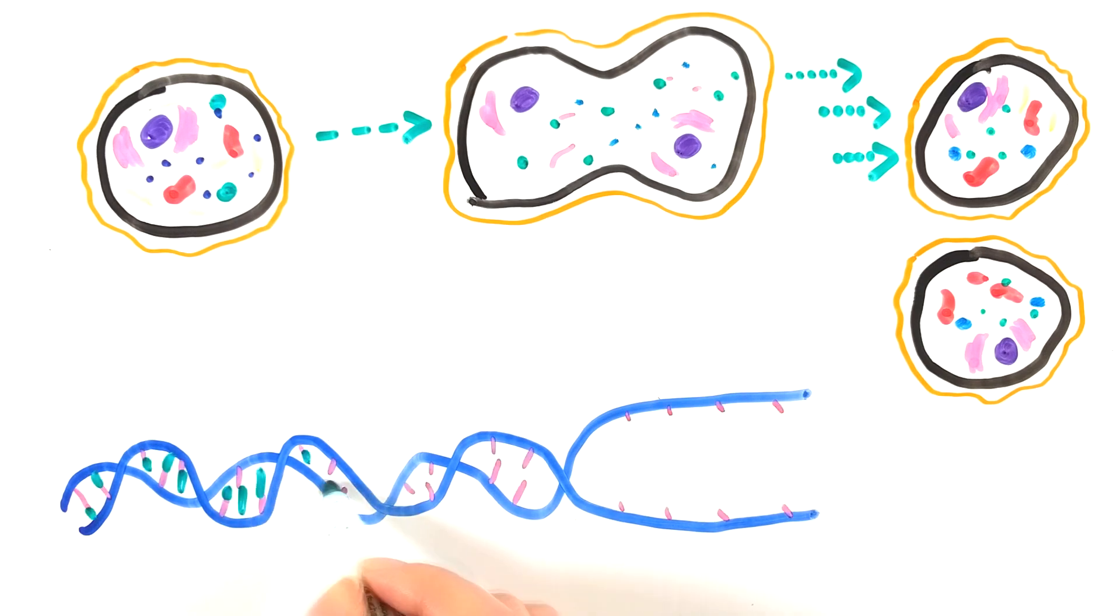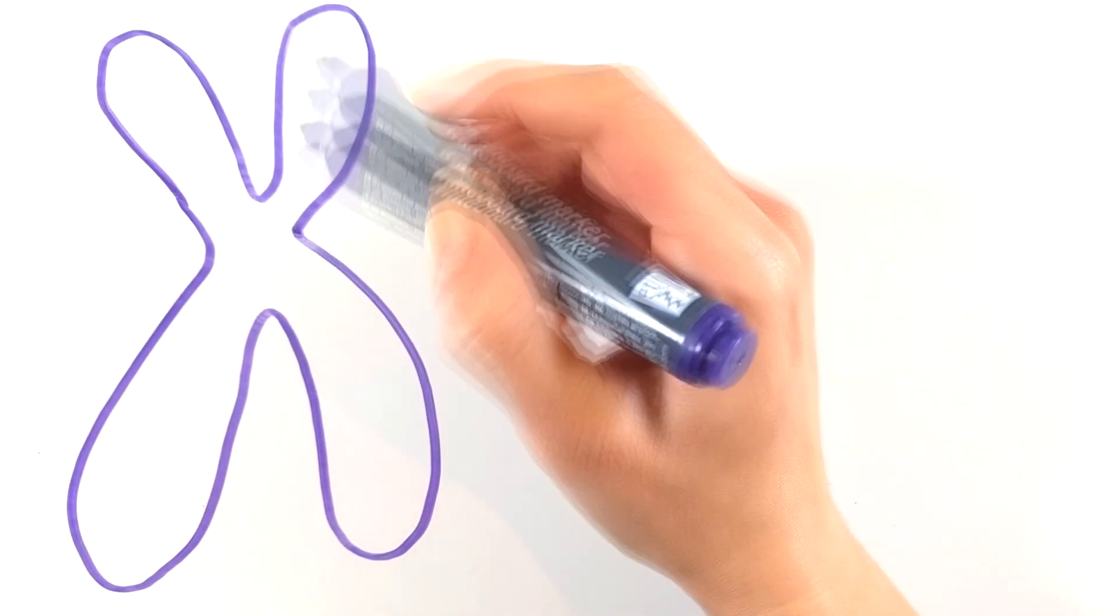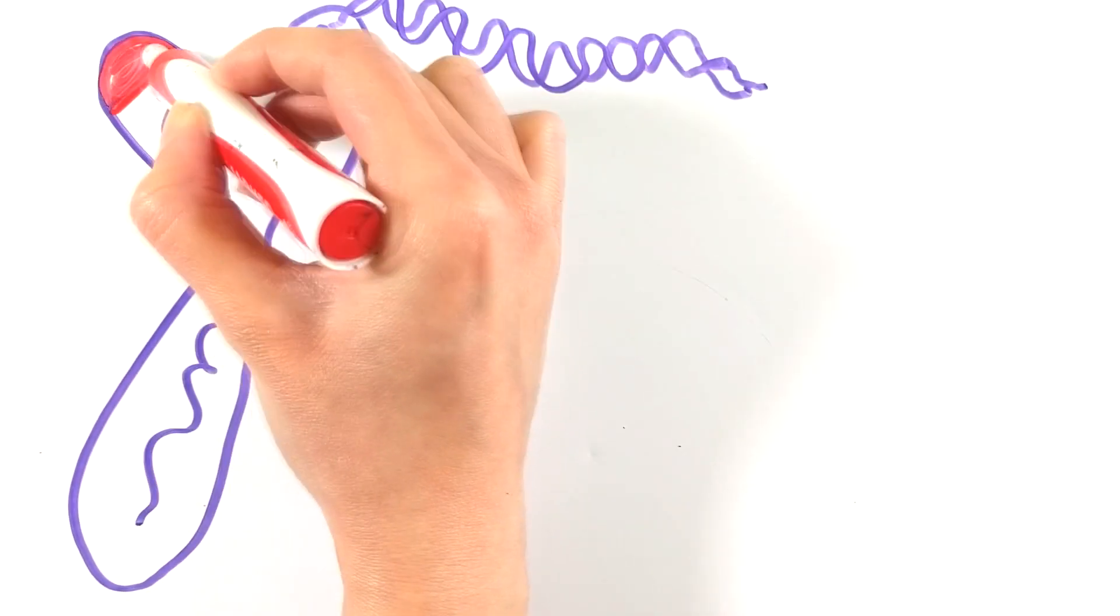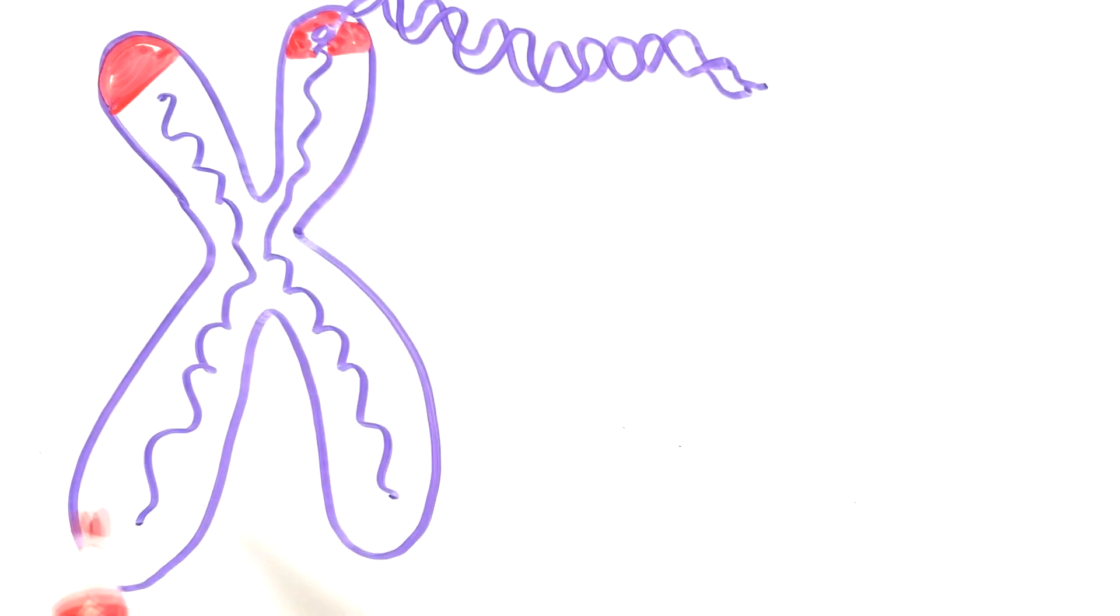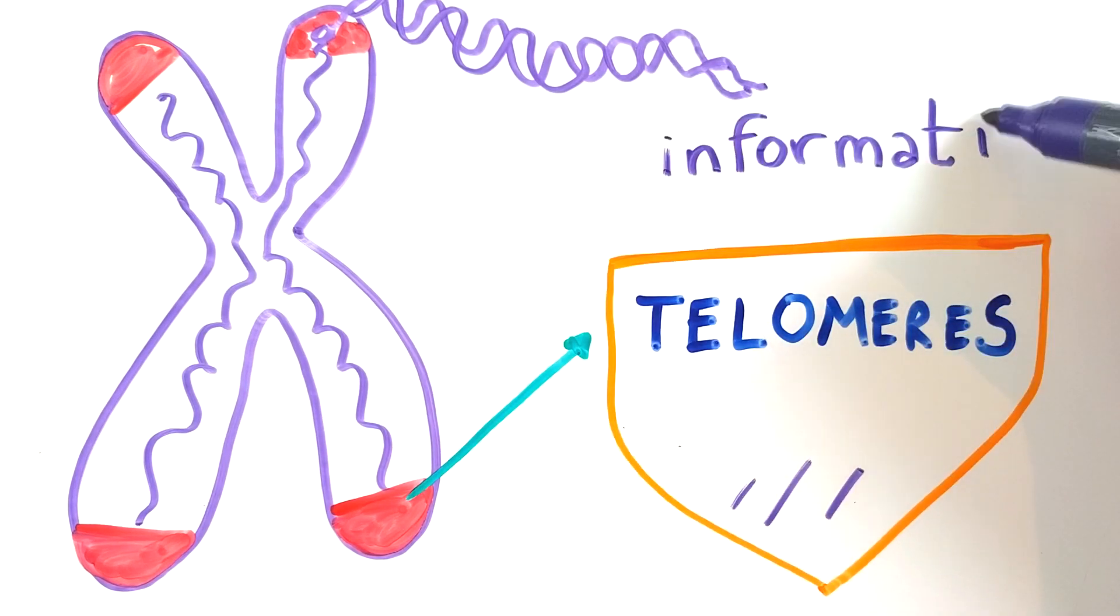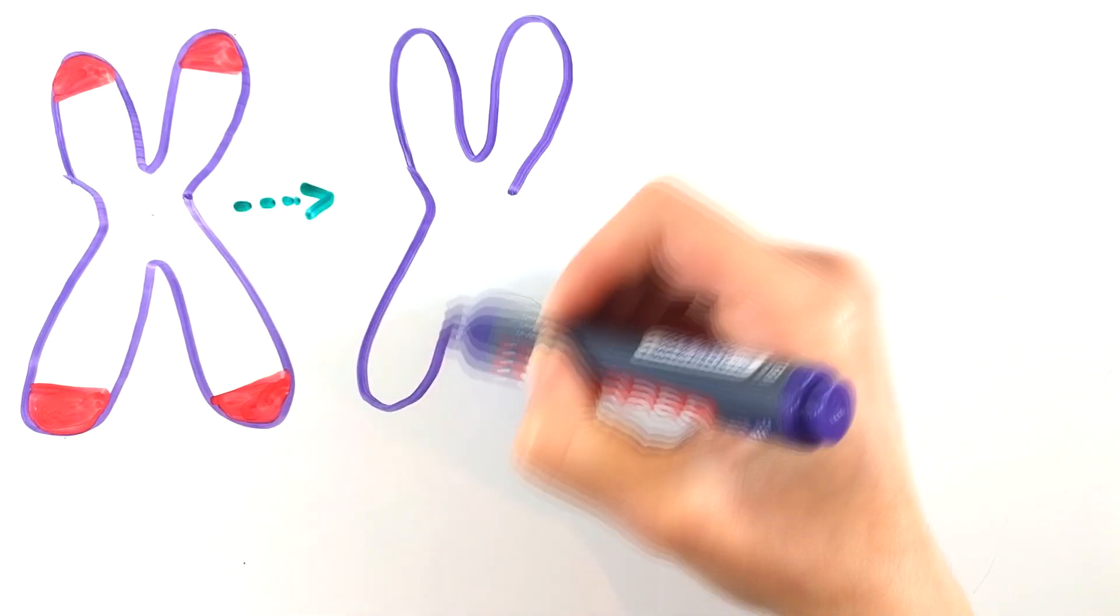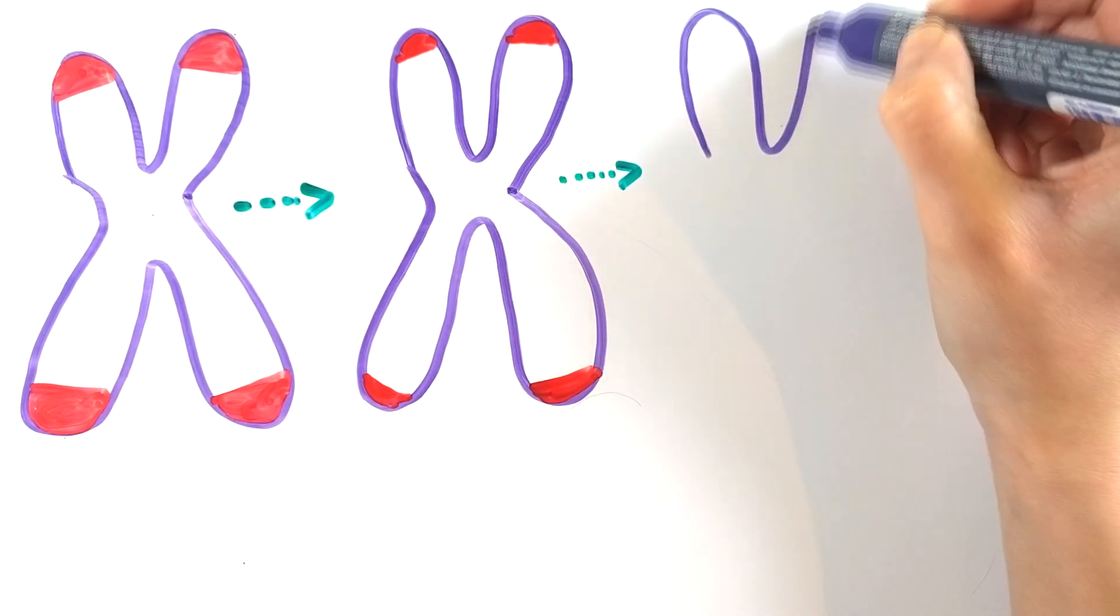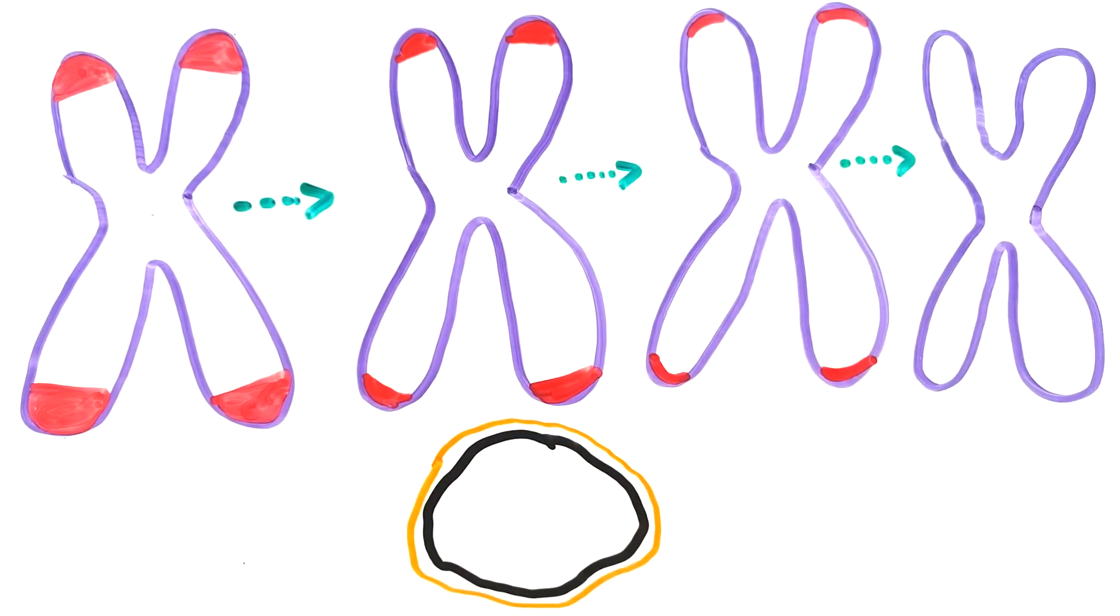The way our body works is when the cells divide they also replicate the DNA molecule. Our DNA is tightly packed within chromosomes. At the ends of these chromosomes are structures called telomeres. Telomeres are there to protect the DNA from losing the important information. Every time cells divide these protective regions become shorter and shorter until they disappear. When this happens cells cannot divide anymore and they die.